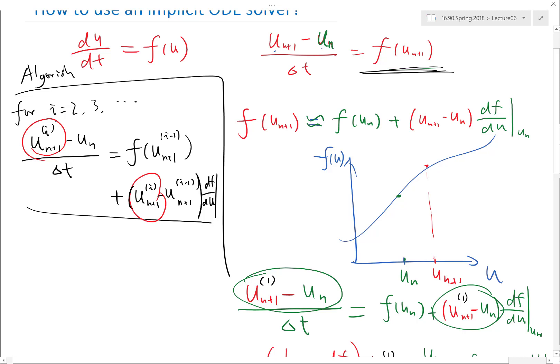The general idea of Newton's method is to first assume I have an initial guess that is close enough to the true solution, which here is a perfect example of the case, because I know when delta t is small enough, my u_{n+1} should be close enough to u_n.